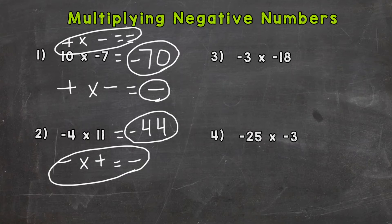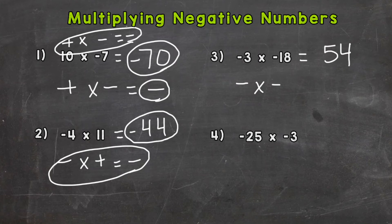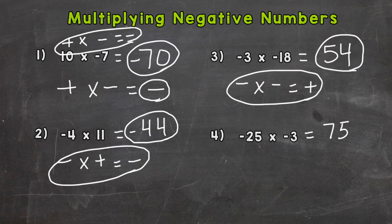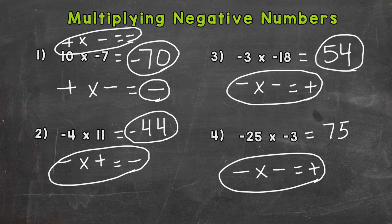Let's take a look at number three where we have a negative times a negative. We need to do 3 times 18 first, which gives us 54. Now when we have a negative times a negative, it's much like a positive times a positive — we have the same sign for both numbers and it's actually going to give us a positive answer. So our answer is 54 for number 3. For number 4 we have negative 25 times negative 3, so negative times negative again. 25 times 3 gives us 75, and a negative times a negative equals a positive, so the answer to number 4 is 75.